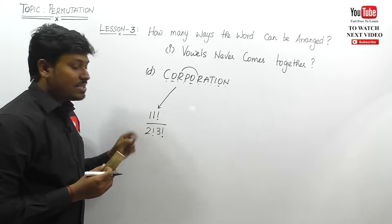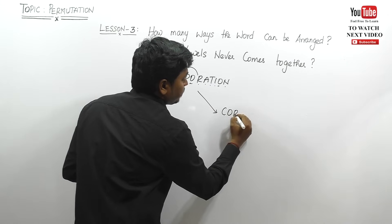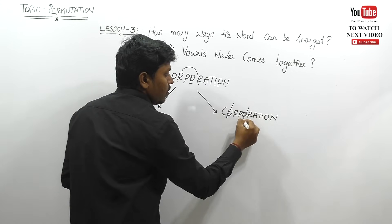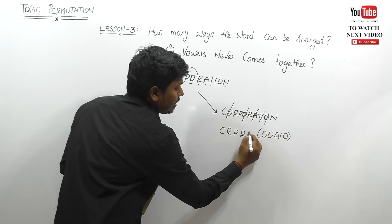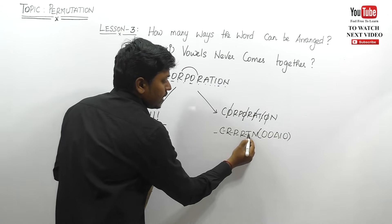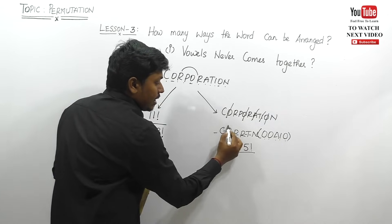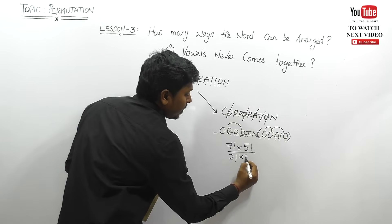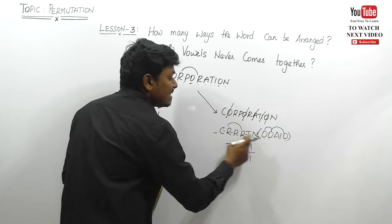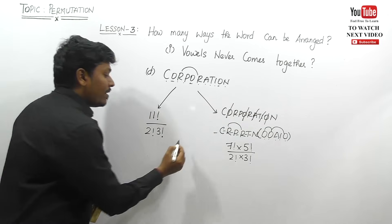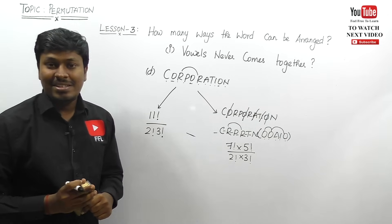For lesson two — vowels always come together — in CORPORATION, the vowels are O, O, A, I, O. Place them inside a bracket and write the remaining consonants: C, R, P, R, T, N. Count gaps: one through seven — seven factorial. There are five vowels arranged in five factorial ways. O is repeated three times so divide by three factorial. So vowels-together = seven factorial × five factorial ÷ (two factorial × three factorial). Subtracting from the total gives us the arrangements where vowels never come together.